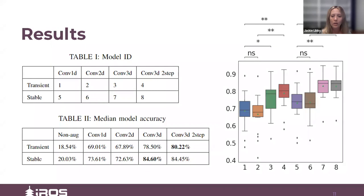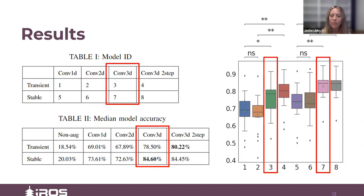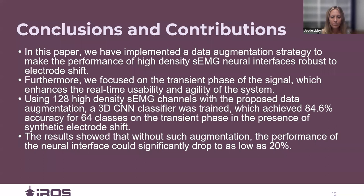Here we present our results. In Table 1, we list the different augmentation experiments conducted, 1 through 8, which correspond to the x-axis of the box plot figure on the right. The first three columns are one-step augmentation with different model structures — 1D, 2D, and 3D CNNs. The last column is two-step augmentation with the 3D CNN. The two rows correspond to the transient and stable phases of the data. Table 2 shows our model accuracies, with an added column benchmarking against a non-augmentation experiment. We can see how badly the non-augmented results are affected by electrode shift. The 3D CNN gives the highest accuracy for both stable and transient phase data. Using our best 3D CNN model structure, two-step augmentation also achieves good accuracies.